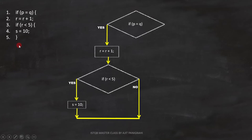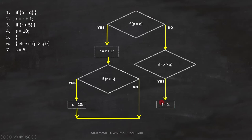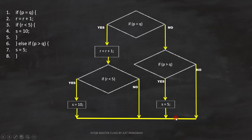Line number 6 has a closing bracket, which is for condition on line number 1 — meaning condition 1 ends here. Next is the else condition: if the first condition fails, then if p is greater than q will execute. Since this is a condition, we can represent it like this. Line number 7 is s equals 5, which executes when the if condition becomes true. Line number 8 is a closing bracket for the condition on line number 6, and this is how we close the flowchart. With this, the flowchart is complete.